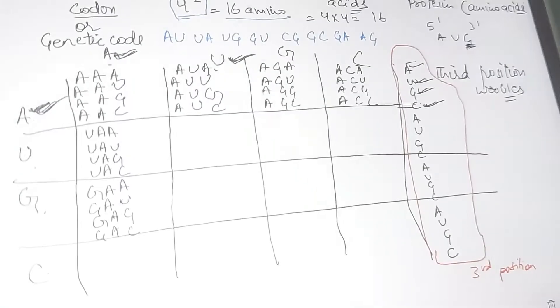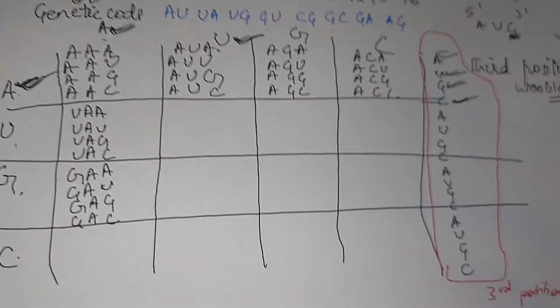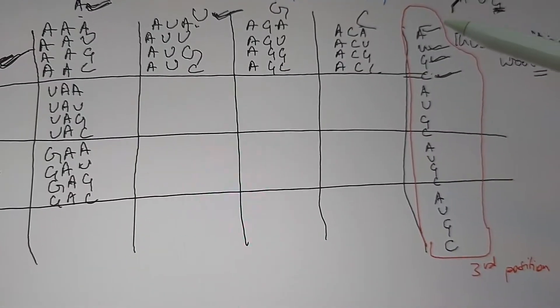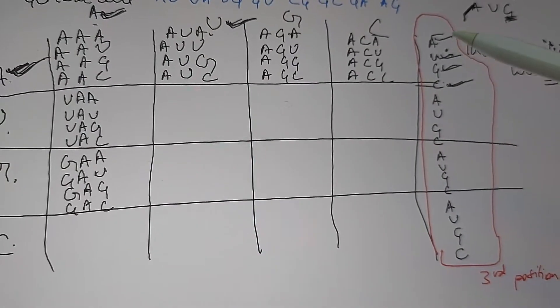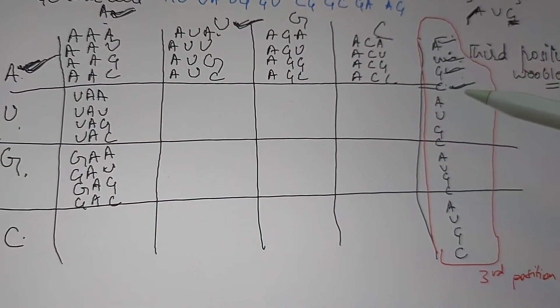So what happens at the third position? What is the third position? The third position can have a lot of options — A, U, G, or C.